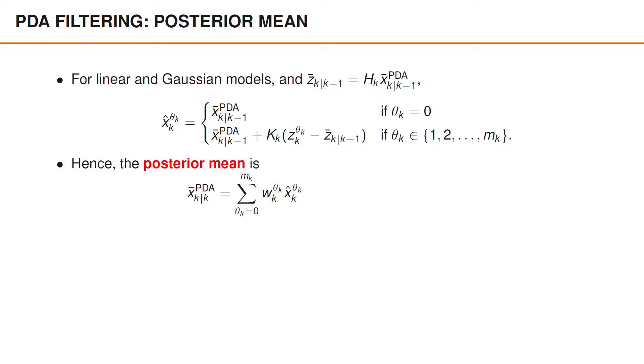We can now plug this into the expression for the posterior mean, which is this summation over theta k from 0 to mk. As you can see, the predicted mean x bar PDA at k given k minus 1 appears in all hypotheses.